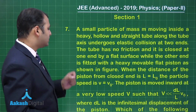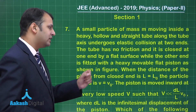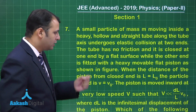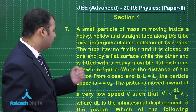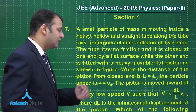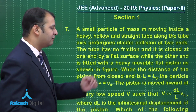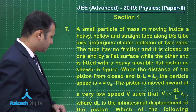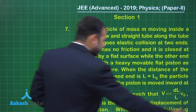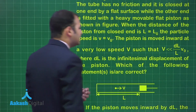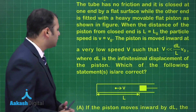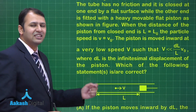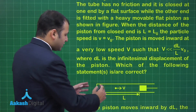When the distance of the piston from the closed end is L₀, the particle speed is V₀. The piston moves inward at a very low speed capital V, such that V is very much smaller than dL/L × V₀, where dL is the very small displacement of the piston. We need to determine which of the following statements are correct.